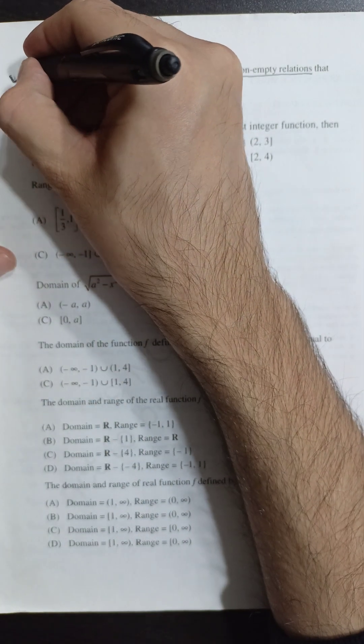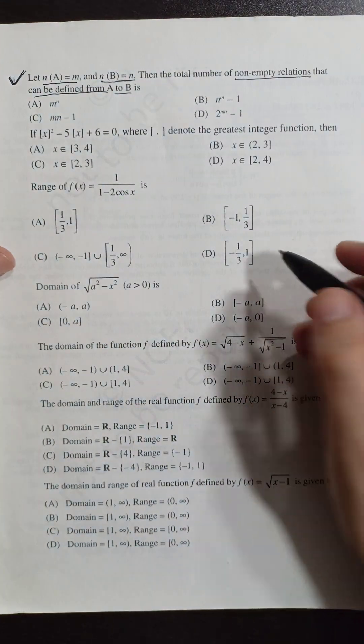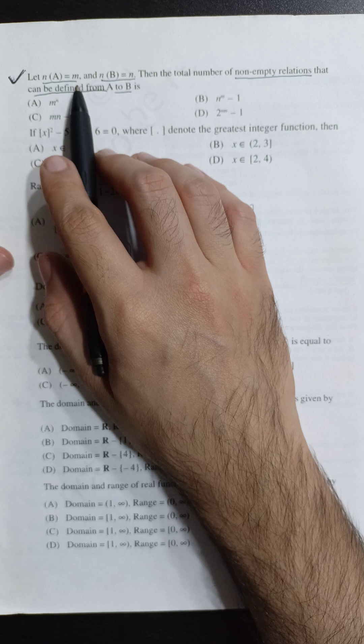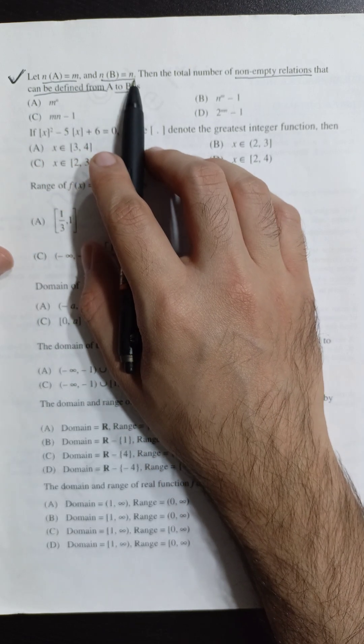Let's look at this question. We are discussing this first question. Number of elements in set A is m, number of elements in set B is n.